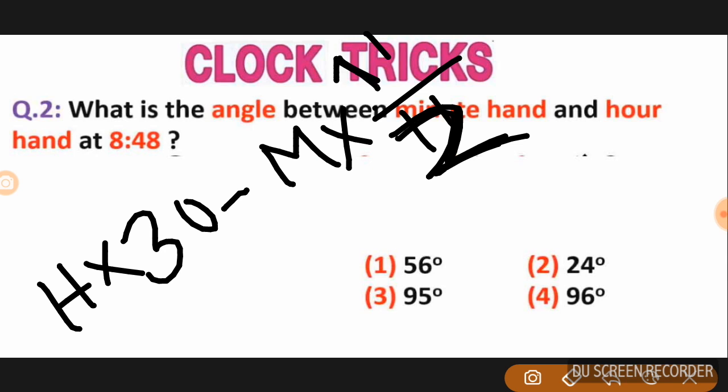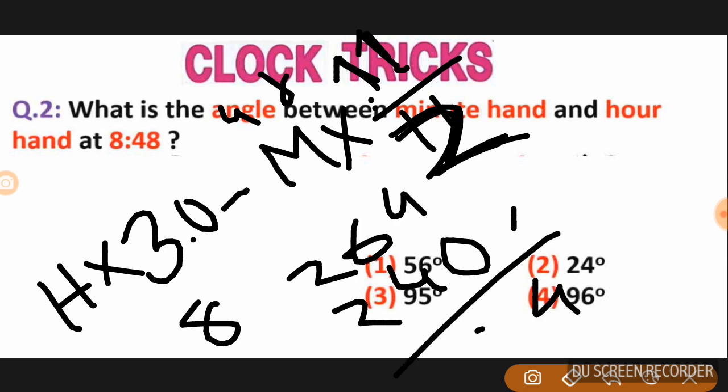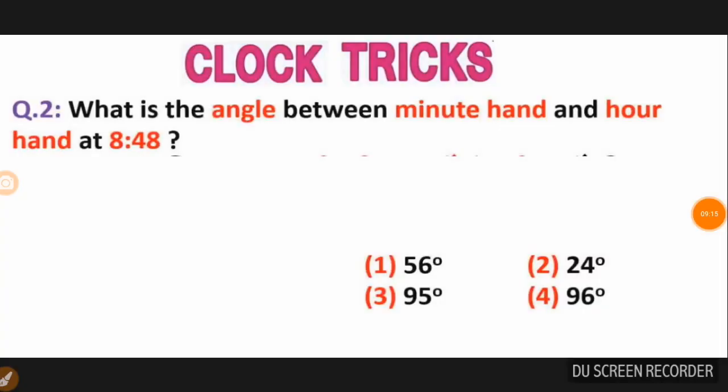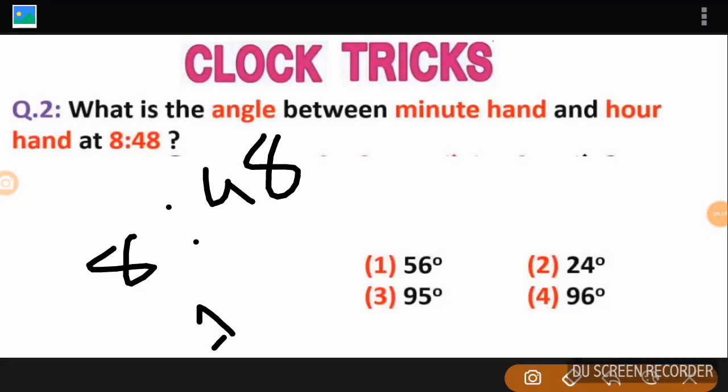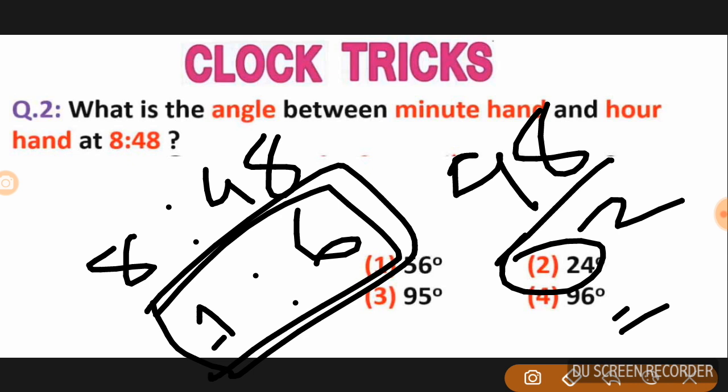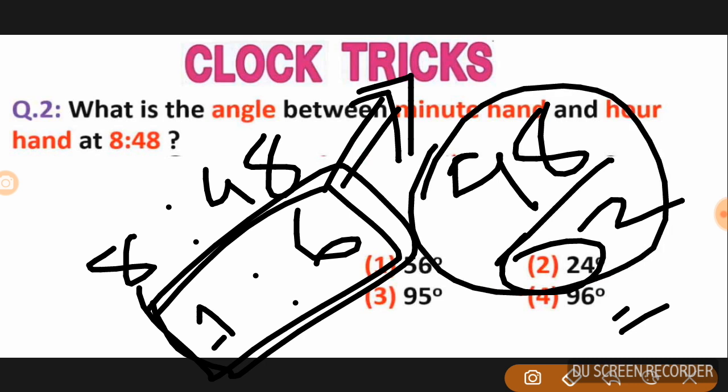For this problem, the hour is 8 and minute is 48. Using the traditional formula: hour into 30 minus minute into 0.5 gives the angle. But remember the ratio trick - one ratio six is another method you can use. The ratio approach makes it easier to calculate.